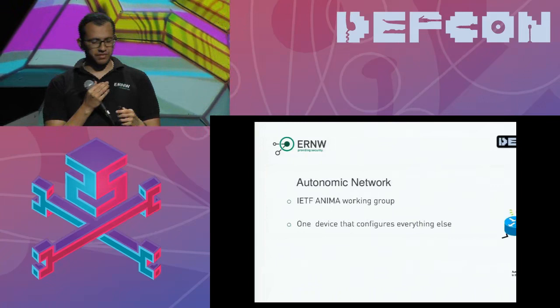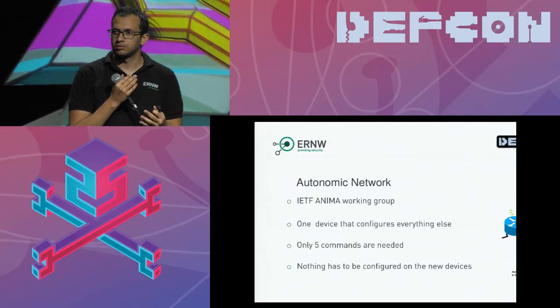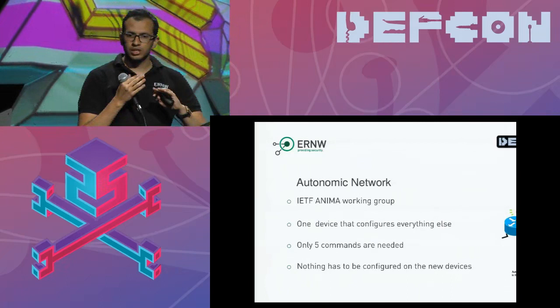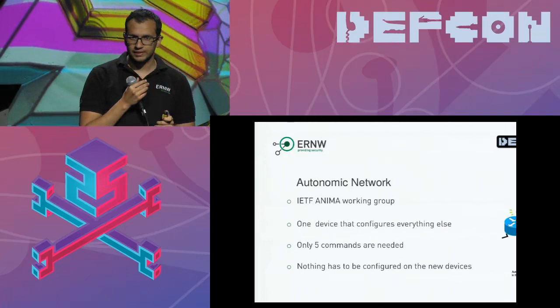What if I have a new device — how many commands do I need to write? None. You don't have to write anything at all. What if I have an old device with a previous running configuration? Just one command — 'autonomic'. Once you connect your device to the one device we call the register, it will have a basic configuration. This sounds a little bit optimistic, but let's see it live.